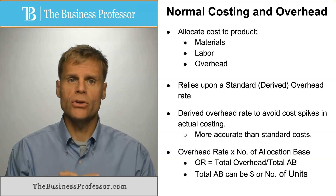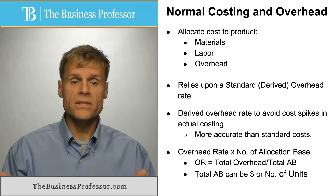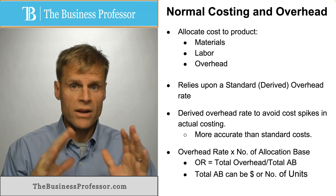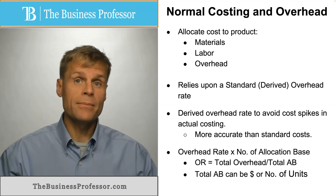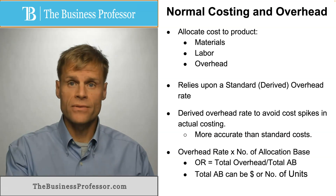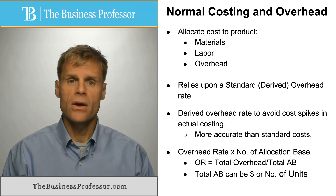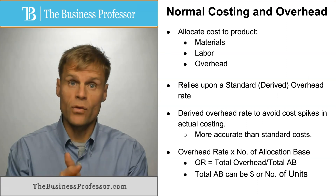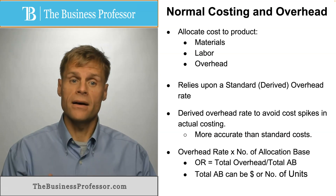How do you calculate your normal costing rate? To get the derived rate, you need your overhead rate first, whatever your company determines that to be. You multiply it by your allocation base — whether that's an hour of someone's time, a certain amount of material that goes into the product, or whatever you determine as the appropriate allocation base. You then multiply that by the overhead rate.